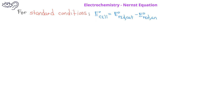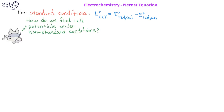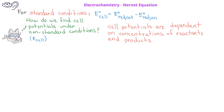As a result, we need a way to determine cell potentials under non-standard conditions. This cell potential under non-standard conditions is represented by just E subscript cell. Since cell potentials are related to free energy change, and free energy change is dependent on the ratio of the products to reactant concentrations, it should be clear that cell potentials are also dependent on the ratio of product to reactant concentrations.